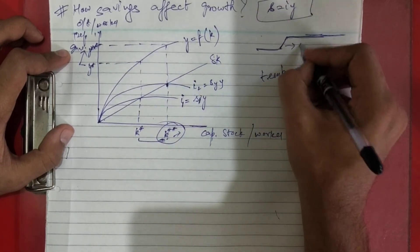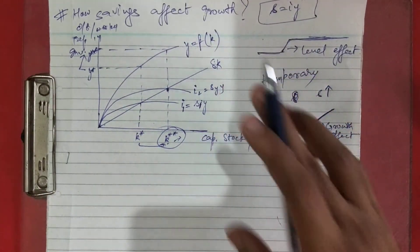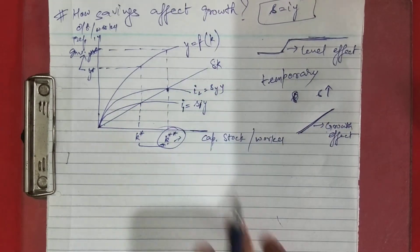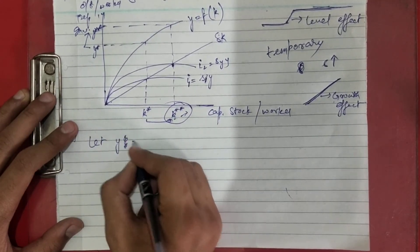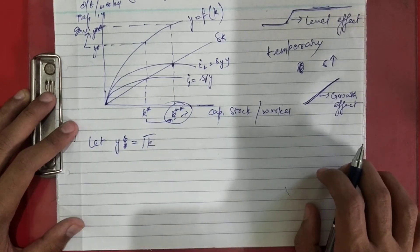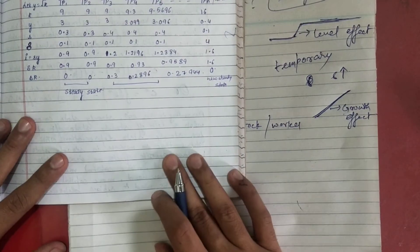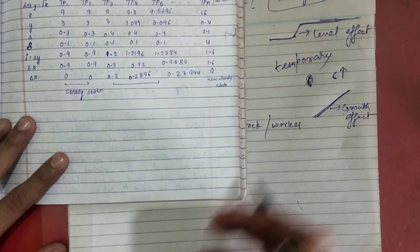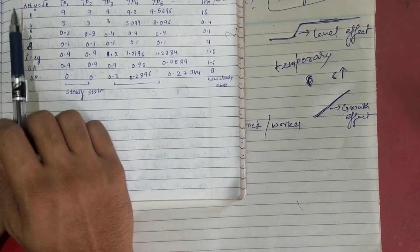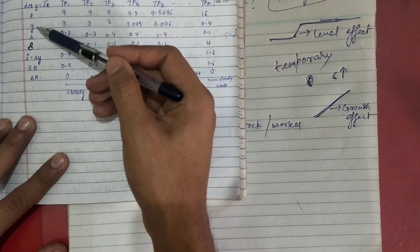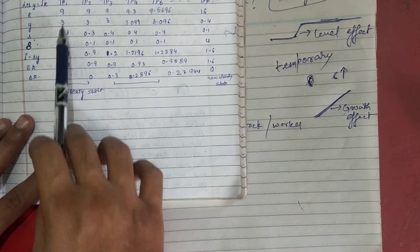Let me show you a table to illustrate this. We have assumed y = √k, and the components k, y, s, and delta are the same as assumed in the previous example: s = 0.3 and delta = 0.1. The table shows k, y, the investment function, total depreciation, and the change in capital.